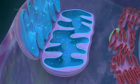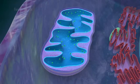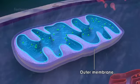Mitochondria are bound by two membranes. Each membrane is a phospholipid bilayer with embedded proteins. The outer membrane is smooth.